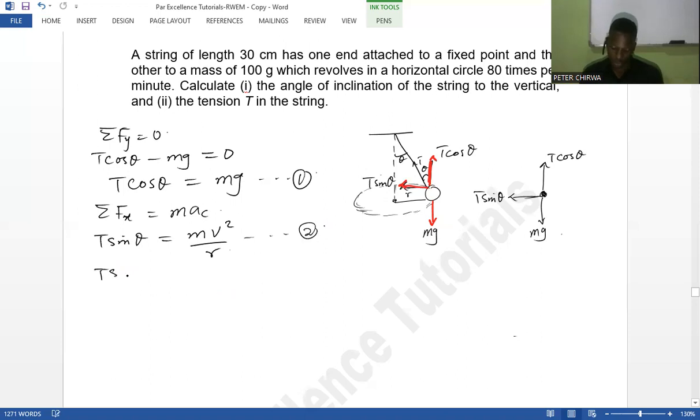What I can do here is to divide my two equations, equation two divided by equation one. I'm going to have M v squared over R divided by M g. So I'm going to have sine theta over cos theta equal to v squared over R g. The masses are going to cancel.